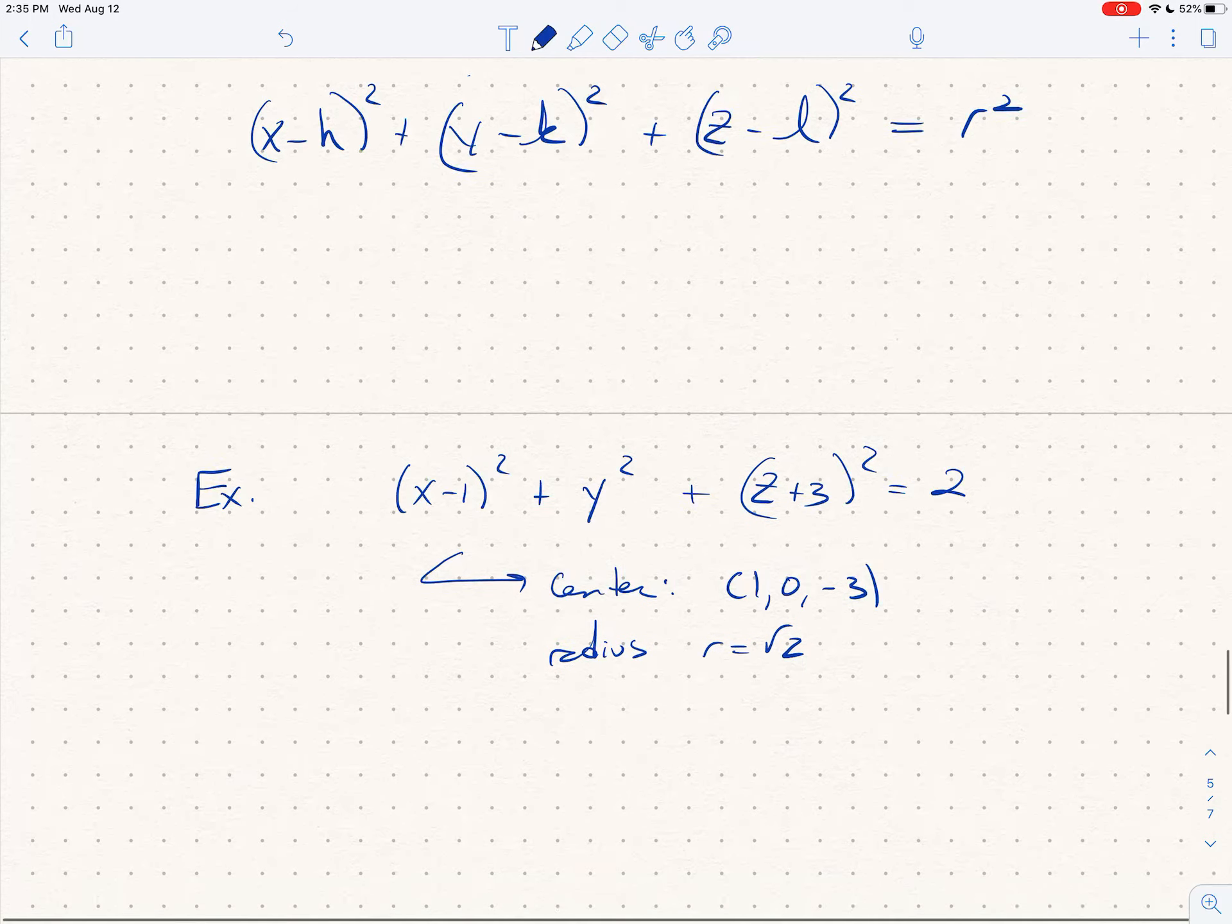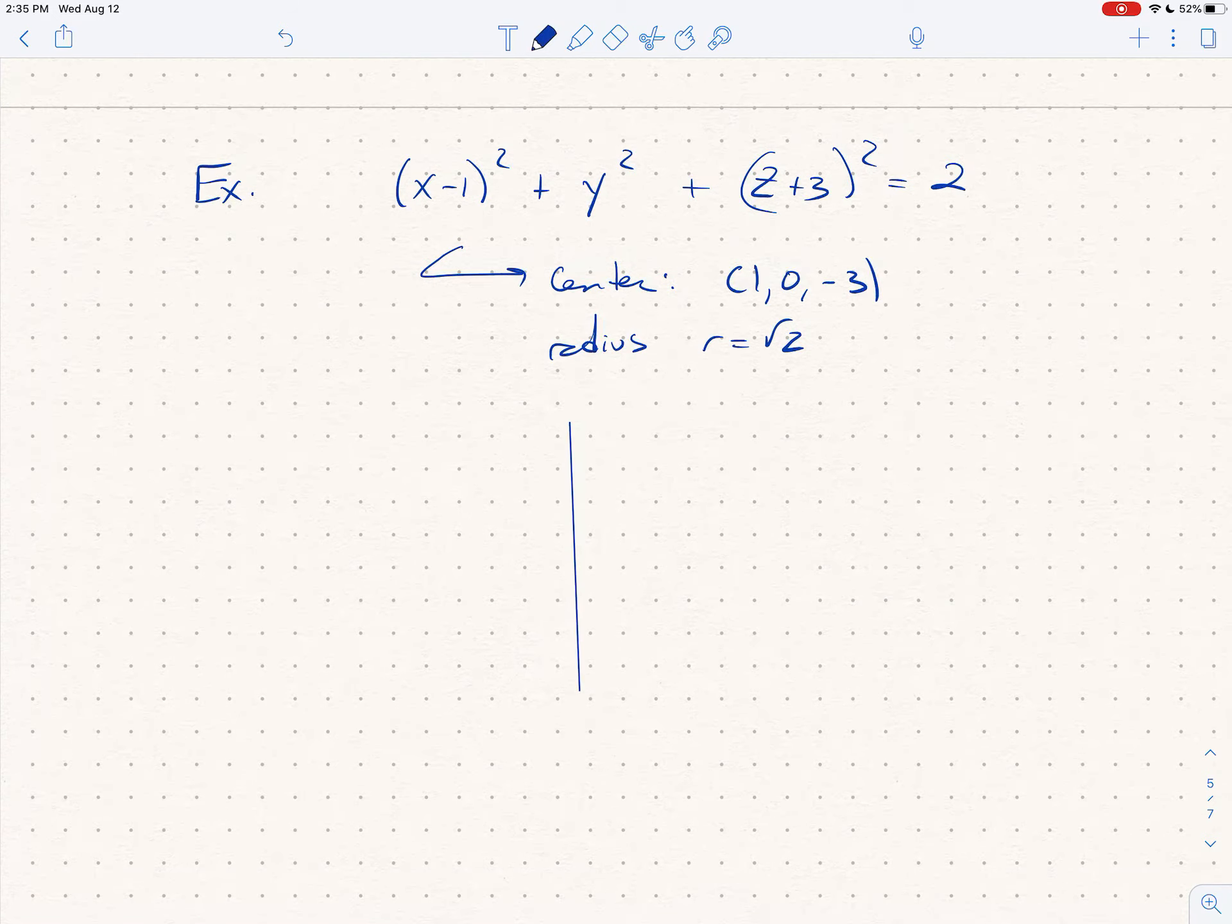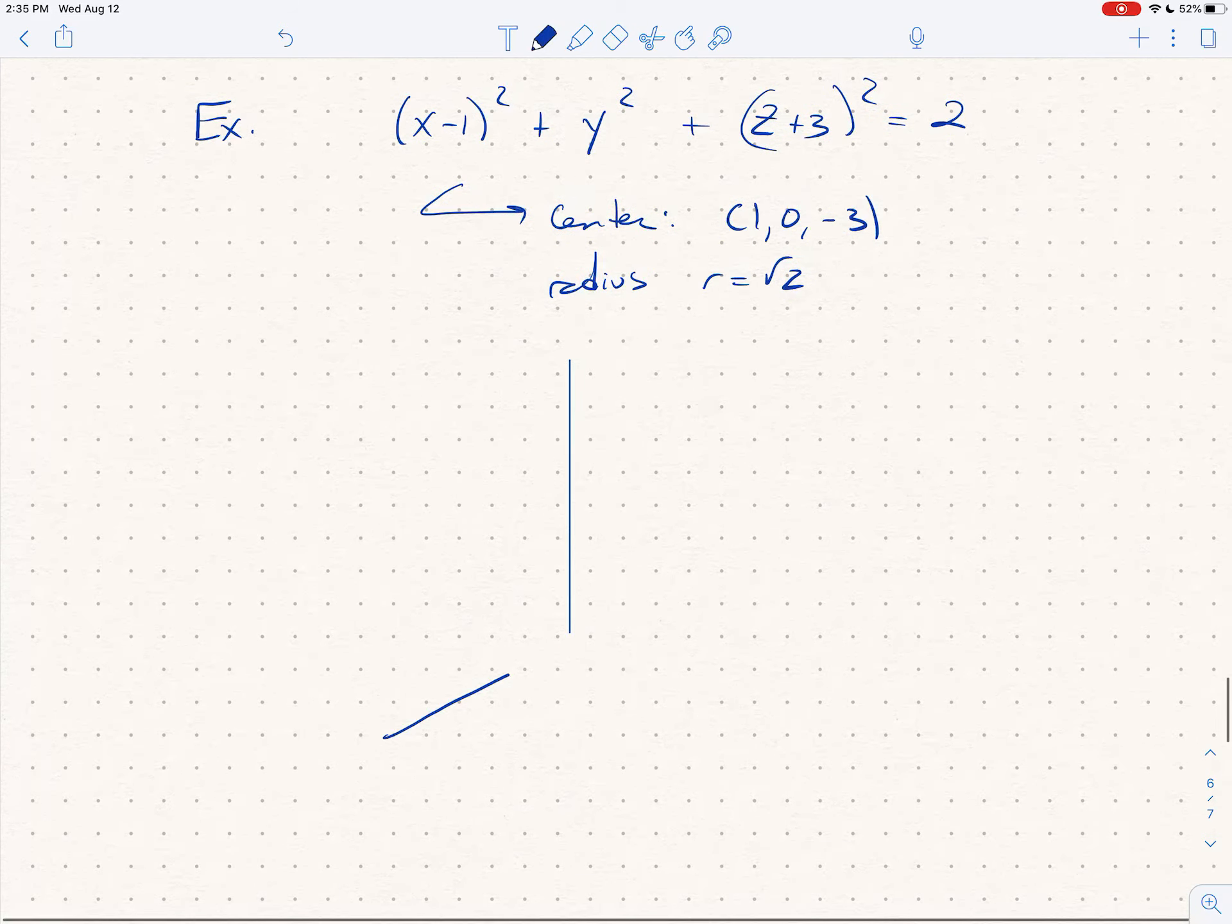And if I asked you to graph it, I'm not looking for perfection by any means when you're graphing things by hand. I'm not actually capable of graphing them perfectly myself obviously, so I won't expect you to. But you're going to find the center, so we'll plot the center: 1 on the x-axis, 0 on the y-axis, then want to go down—whoops—down negative 3, so somewhere down here is the center. We're going out √2, so we're going to get this sphere that looks something like that.